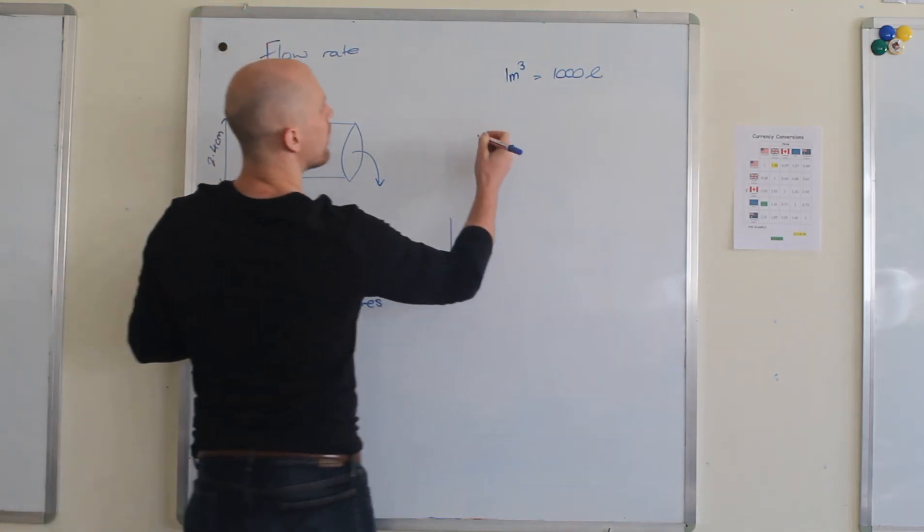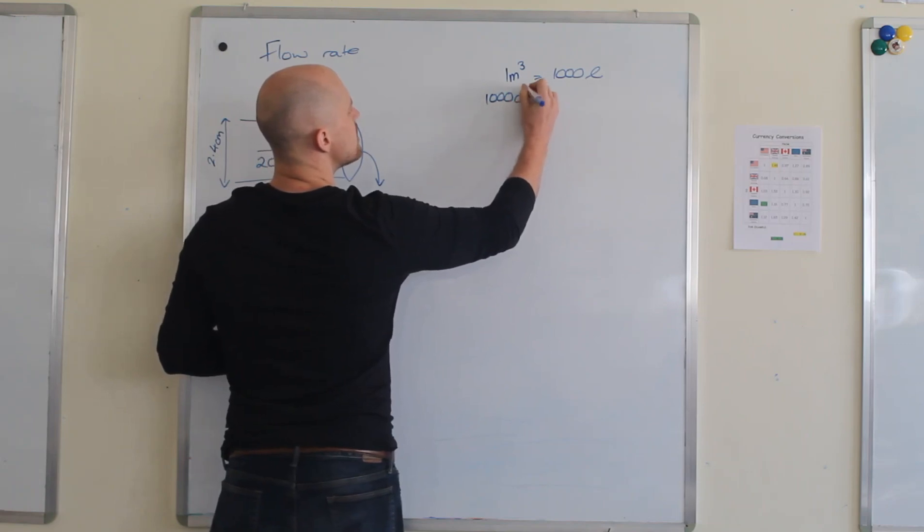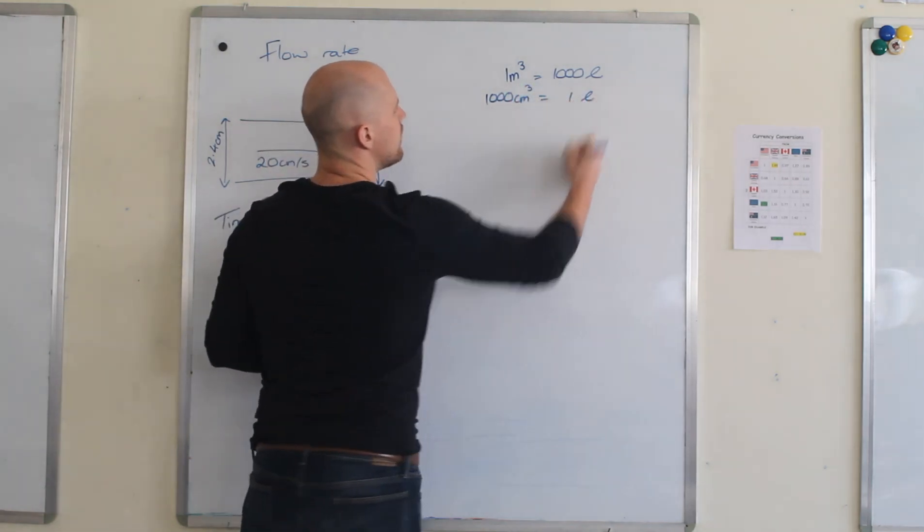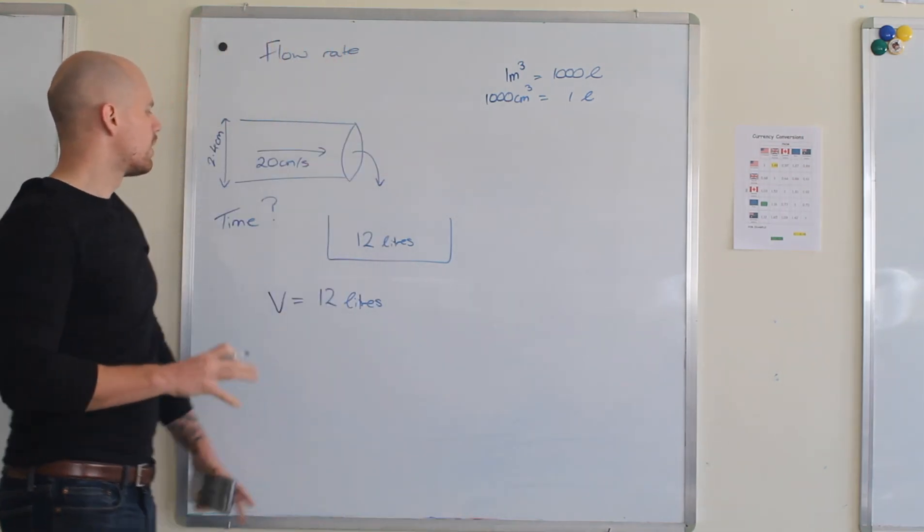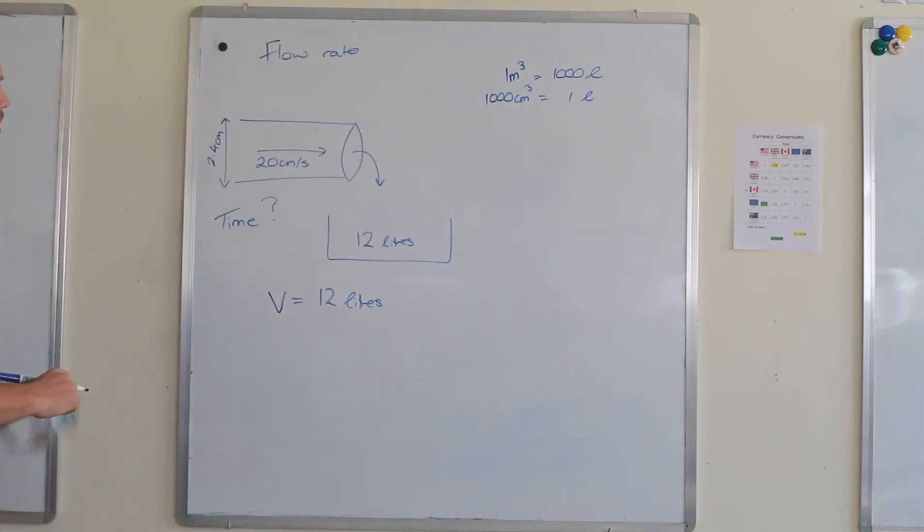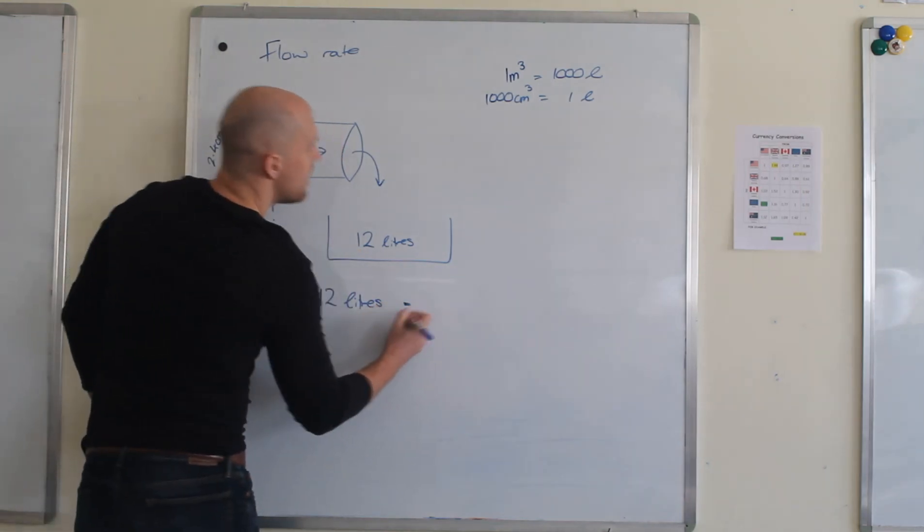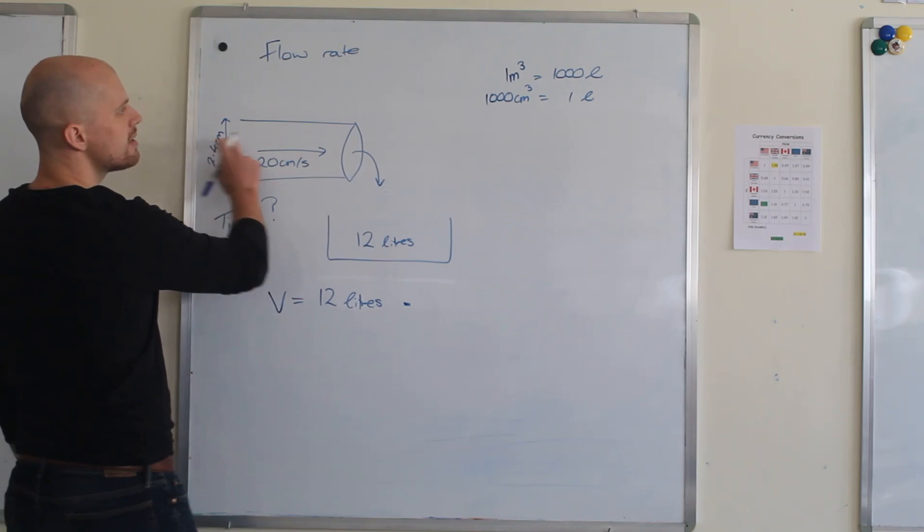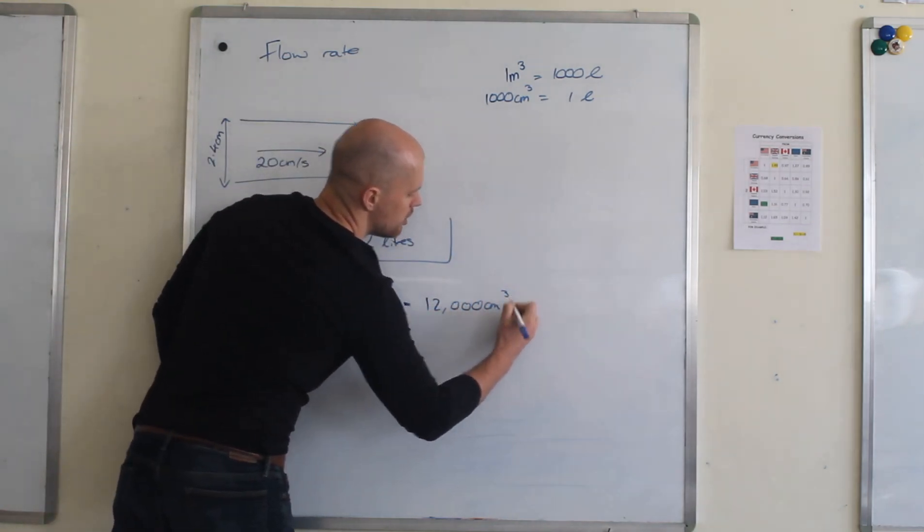And then when you switch it round, you just change it the other way around. So a thousand centimeters cubed is one liter. So one liter is a thousand centimeters cubed. One liter is ten by ten by ten. So I can apply that here. Twelve liters is therefore, we're looking in centimeters, so I'm going to be using this, it's twelve thousand centimeters cubed.